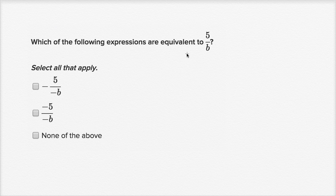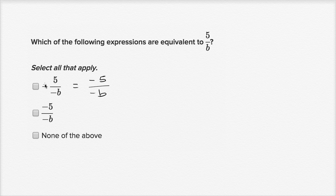Which of the following expressions are equivalent to five over b? Select all that apply. The first option is negative five over negative b. We can think of the leading negative as multiplying just the numerator, giving us negative five over negative b. A negative divided by a negative is a positive, so this is equal to positive five over b, which is what we're looking for. So this is correct.